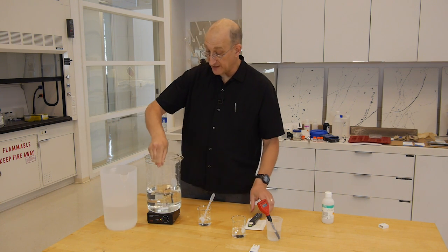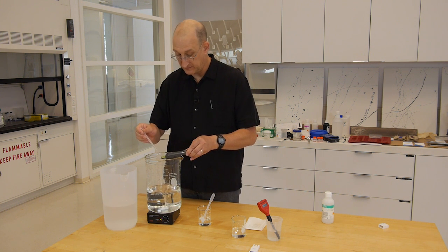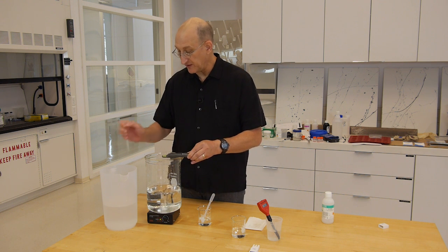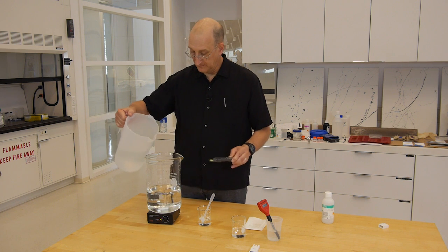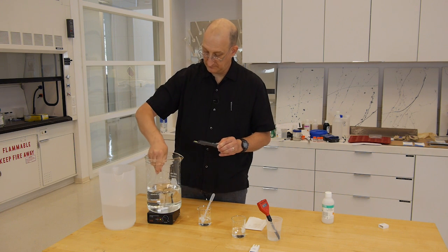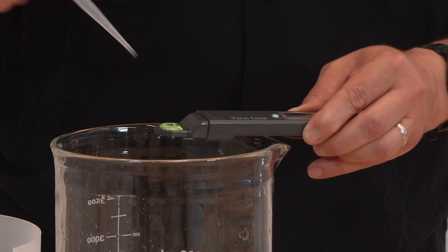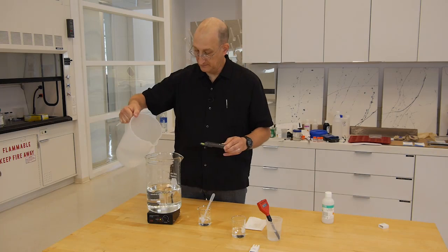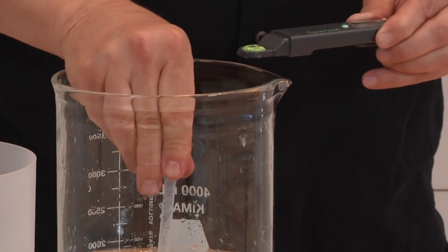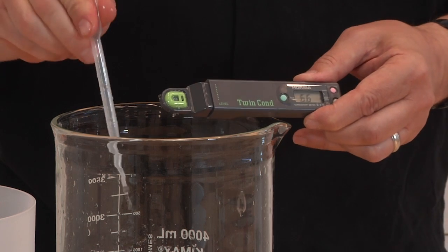And this is distilled or deionized water. Obviously, if we're controlling the ionic strength, we want to have water with essentially no ionic content. So we're at 7.6 now. 7.1, 6.6.